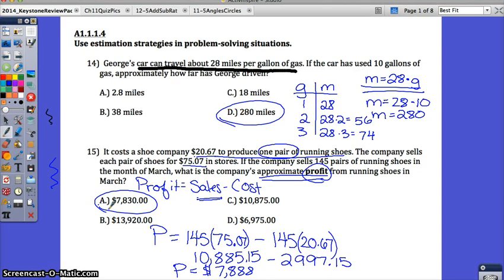On any estimating problems, you can round in the work to make it easier. But if you have a calculator on this, which on the keystones you will have a calculator, then you can also just find the exact answer and see which one's closest. If I wanted to estimate this, I could have rounded this to about $20 to produce one pair, or about $21 to produce one pair. And I could have rounded this to about $75 as coming in. Your answer, if you rounded those, would be around $7,830 or $7,975. Either way, A would still be your best answer.